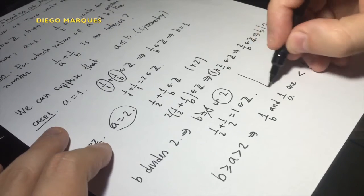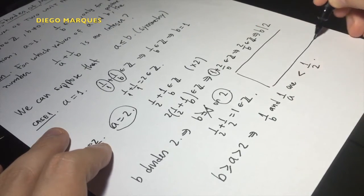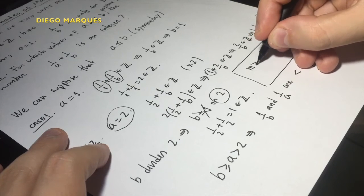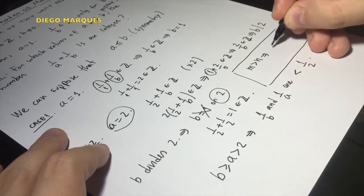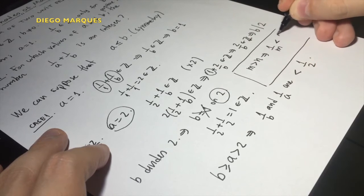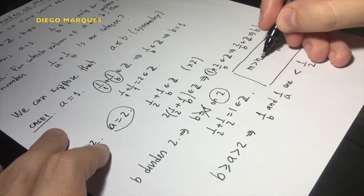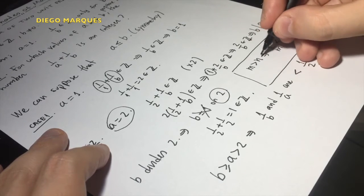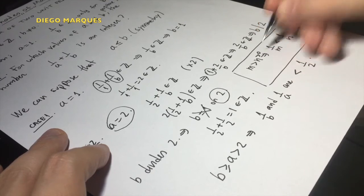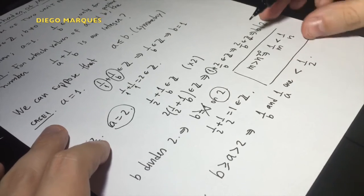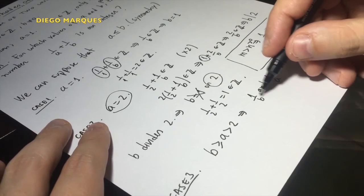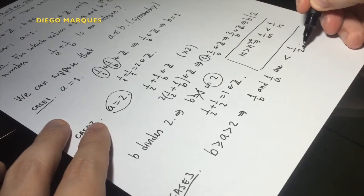Yeah? Because if we have that m is bigger than n, this implies that 1 over m is less than 1 over n, when m and n are different from 0, and n positive, for example.